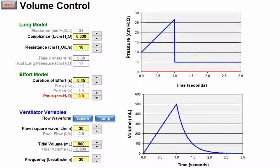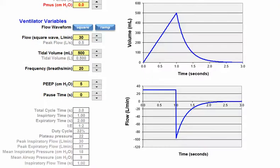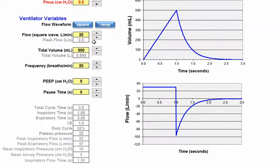The next added functionality is now I have a choice between a constant flow waveform pattern which is my square, or a ramp or decelerating. So this is new to the functionality. At first we only had the square waveform.